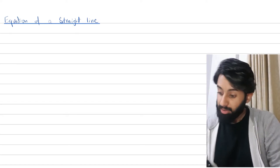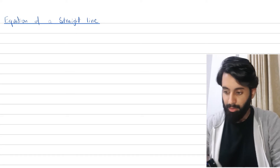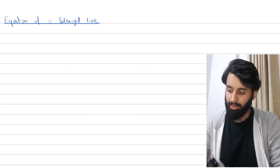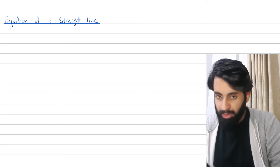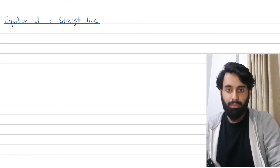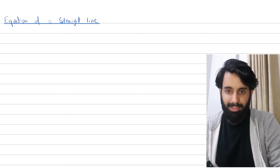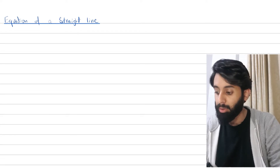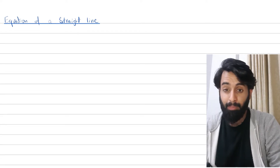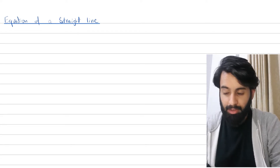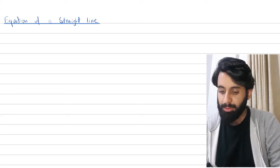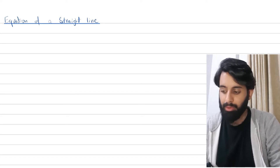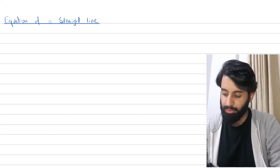Here's another long-pending video that has been due for a very long time. I made the first two parts — in the first part we learned how to find the distance between two points, in the second part we learned how to calculate gradient and some cases related to gradient. In this part, however, we're going to learn how to find out the equation of a straight line.